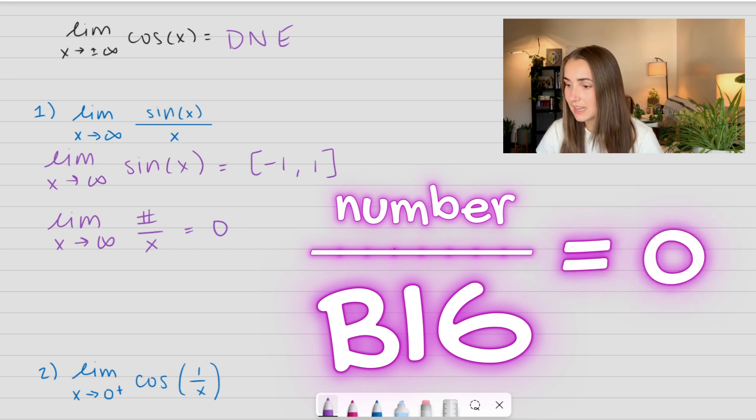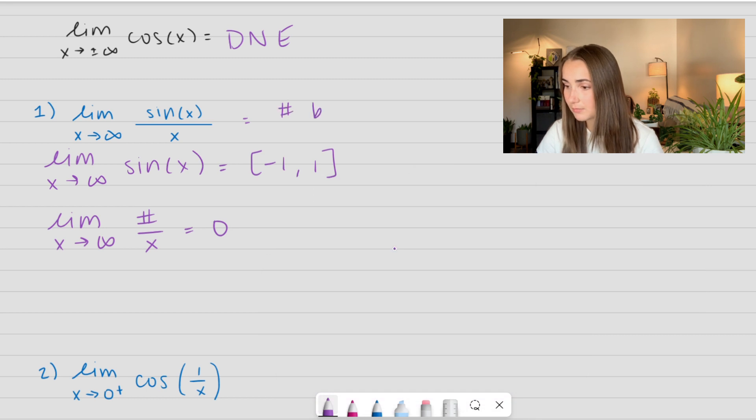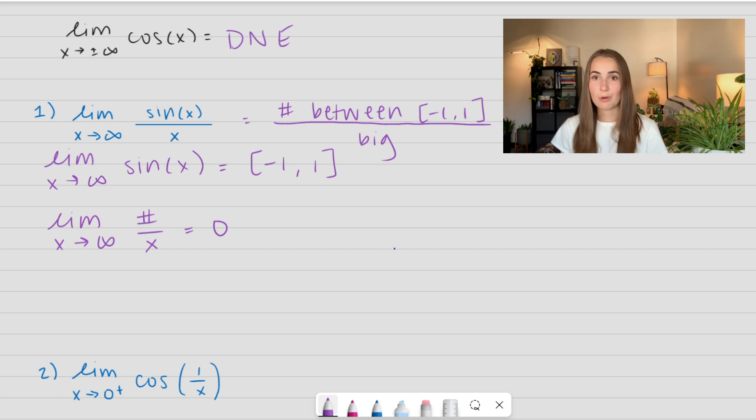So really what this is saying is we have some number, a relatively small number in this case between negative 1 and 1 divided by a really big number. And so this is going to end up going to 0. And that's how we can identify this limit.